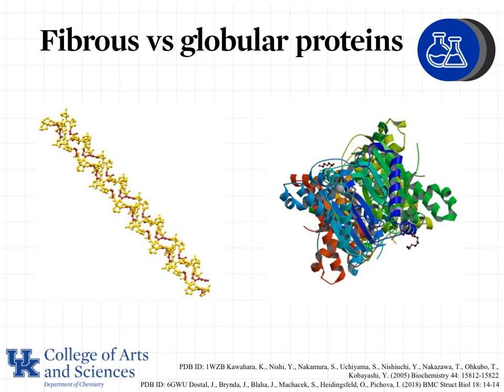The last thing we'll look at briefly is the difference between fibrous versus globular proteins. The names are pretty self-explanatory. Fibrous proteins tend to be long and skinny, and globular proteins tend to be a glob — kind of all wadded up, like our ball of yarn. One common place that we see fibrous proteins is in our hair, because even if it's curly, the proteins are fairly straight, so we're dealing with fibrous proteins.